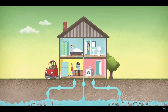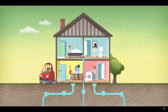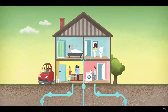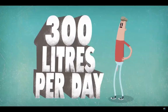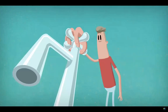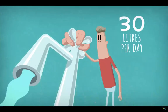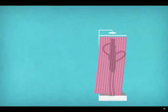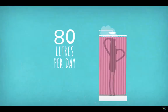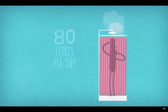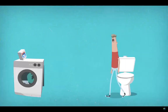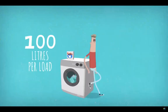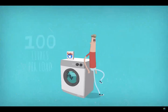We know about the water usage of a typical household. In developed countries, each person uses up to 300 litres of water every day: washing the dishes uses 30 litres per day, taking a shower up to 80 litres per day, flushing a toilet 65 litres per day, and doing the laundry up to 100 litres per load.